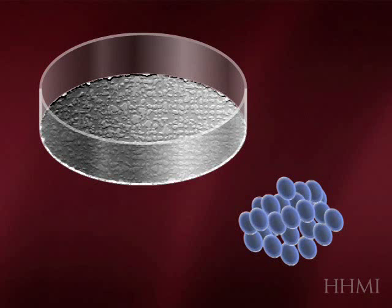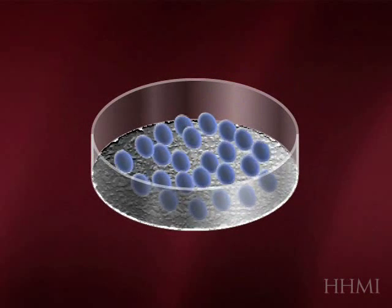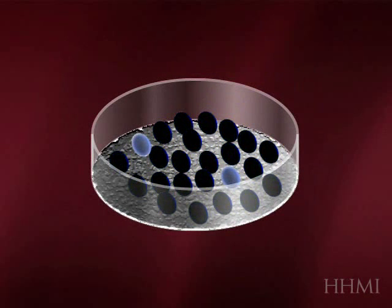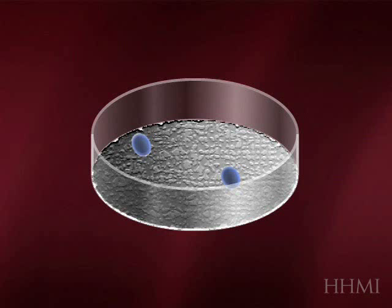Usually there are mouse embryonic fibroblasts on the bottom of it to help the cells grow. Most of them don't survive, but a few do, and can grow into colonies of cells, as you'll see here.